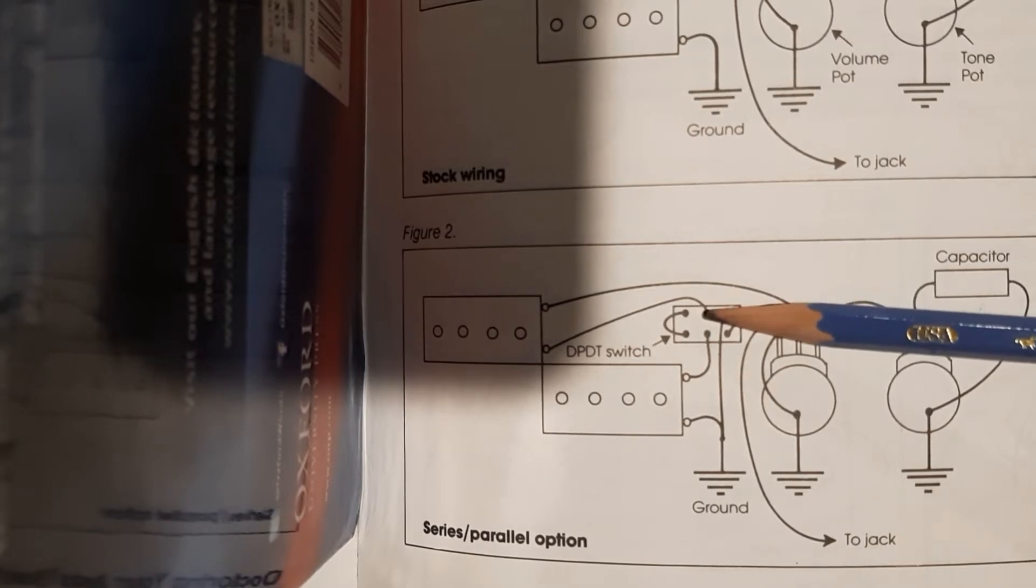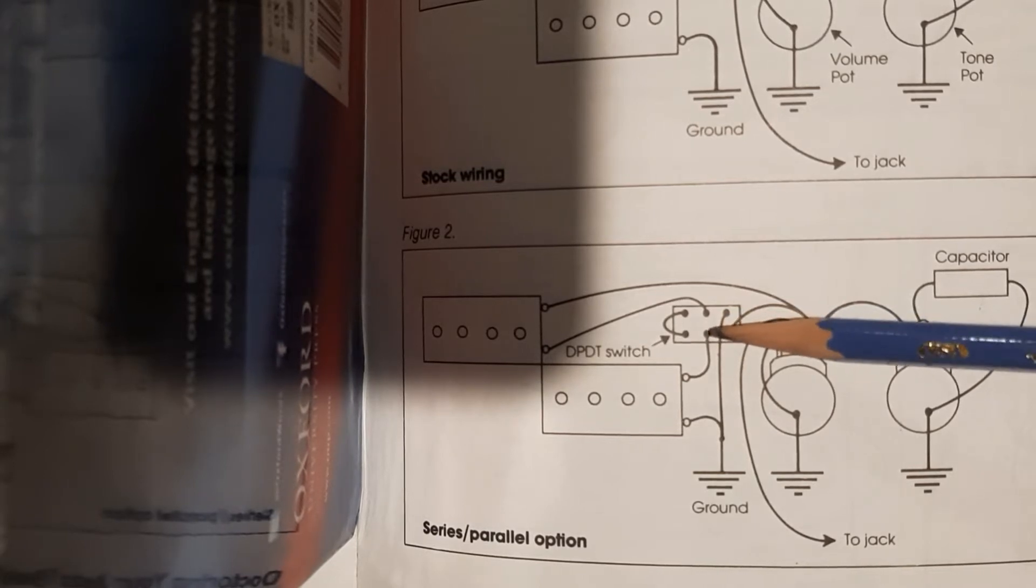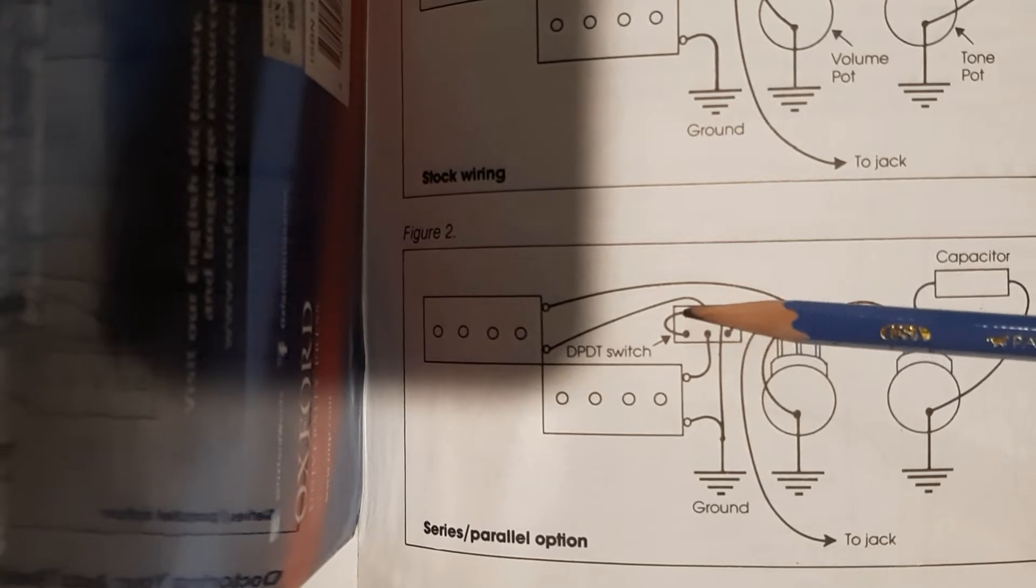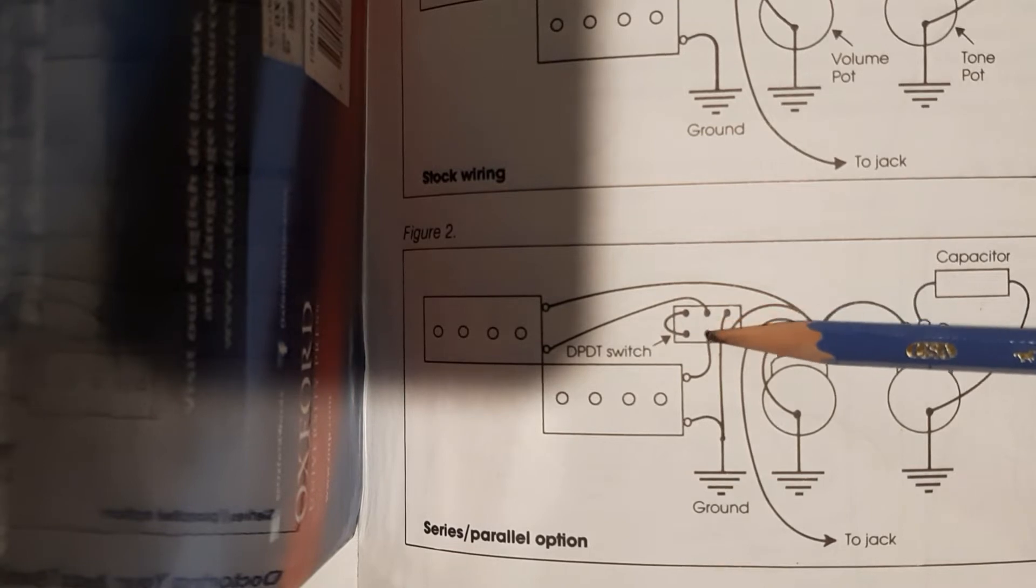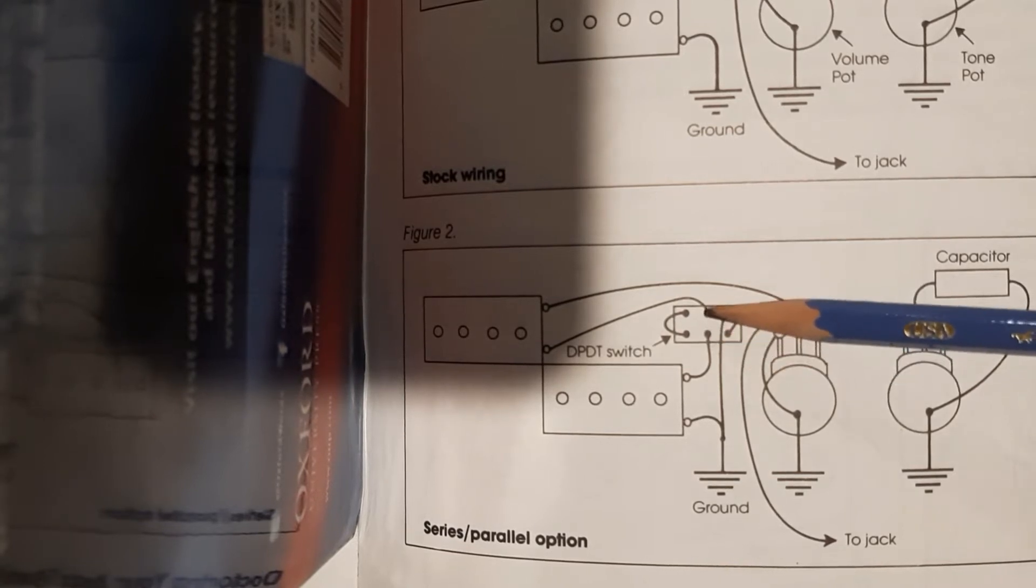That mode, that would be if the switch was up and these are active, this would be the series mode or the stock wiring of a P-bass. When I flip the switch that way, I'm grounding out these two terminals which makes this circuit complete, so that puts it back to the stock wiring.